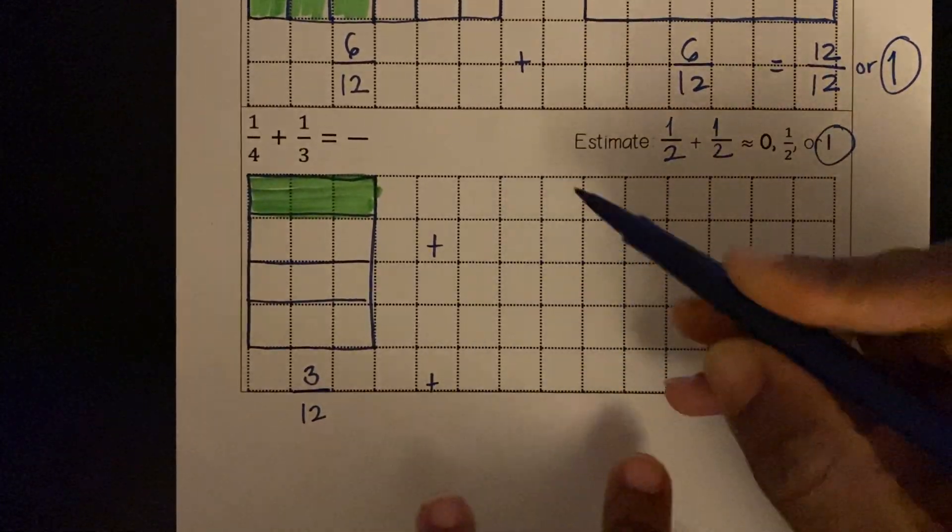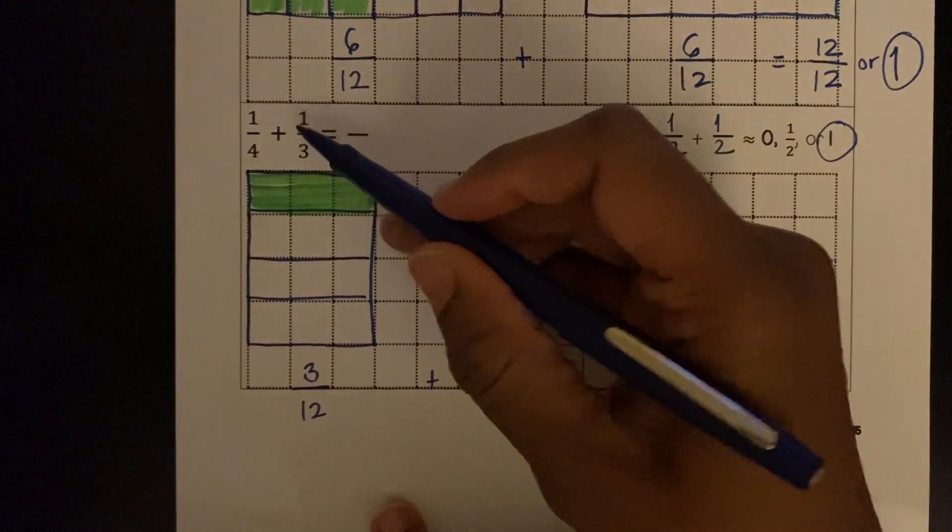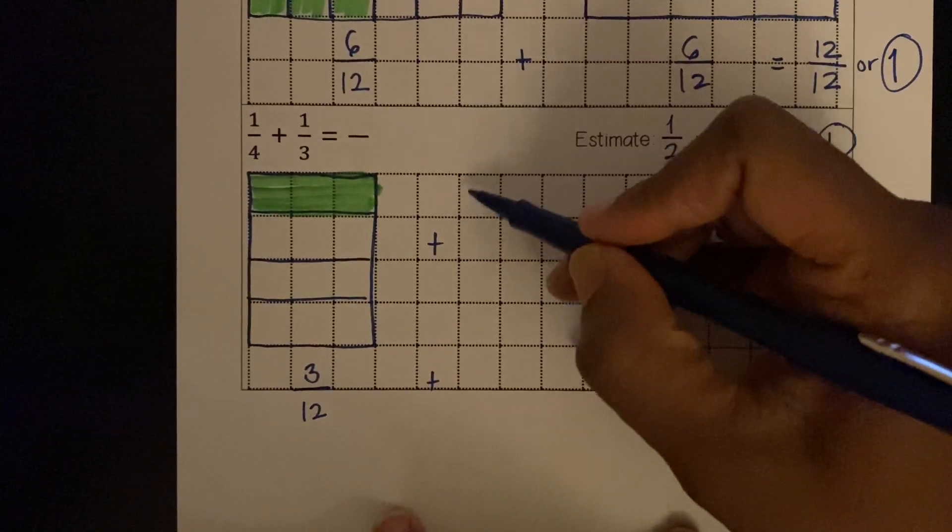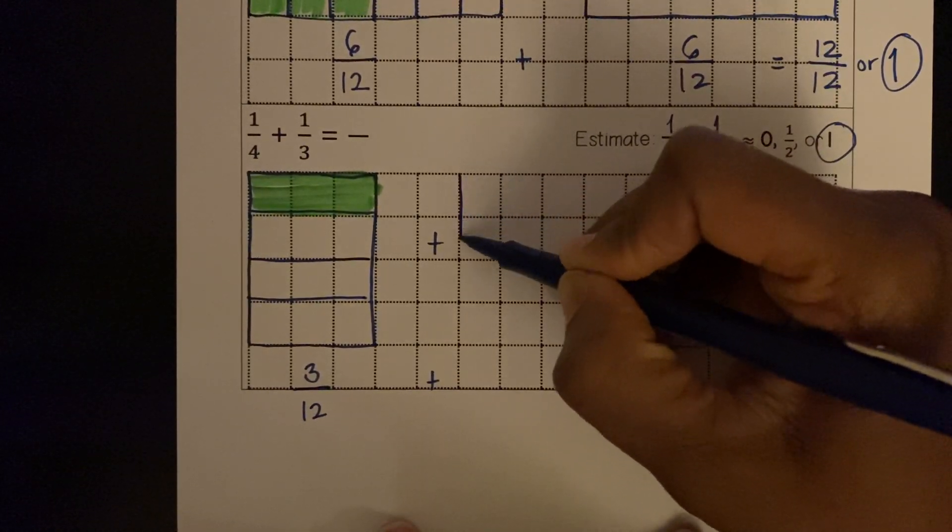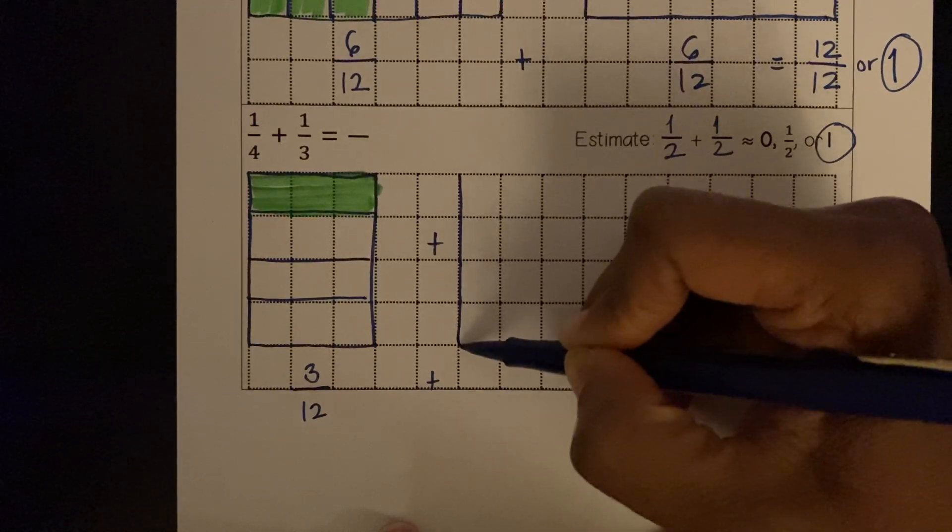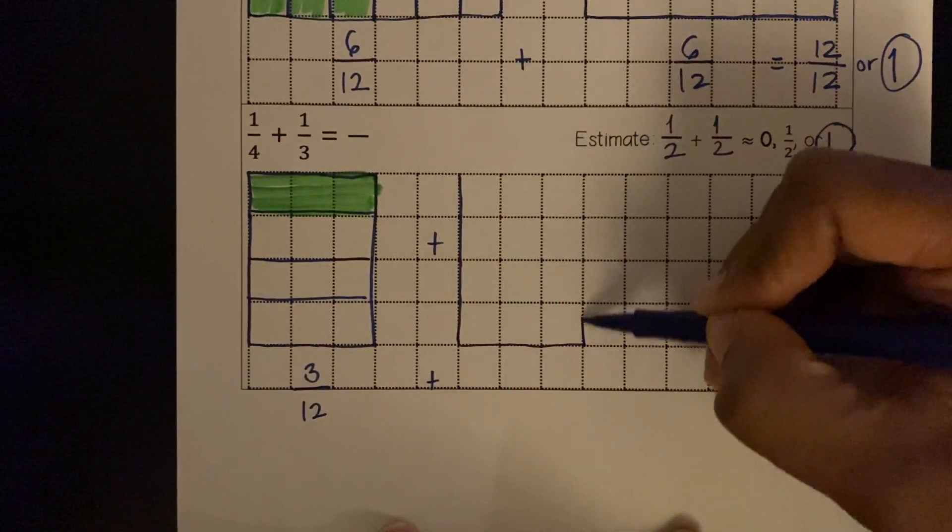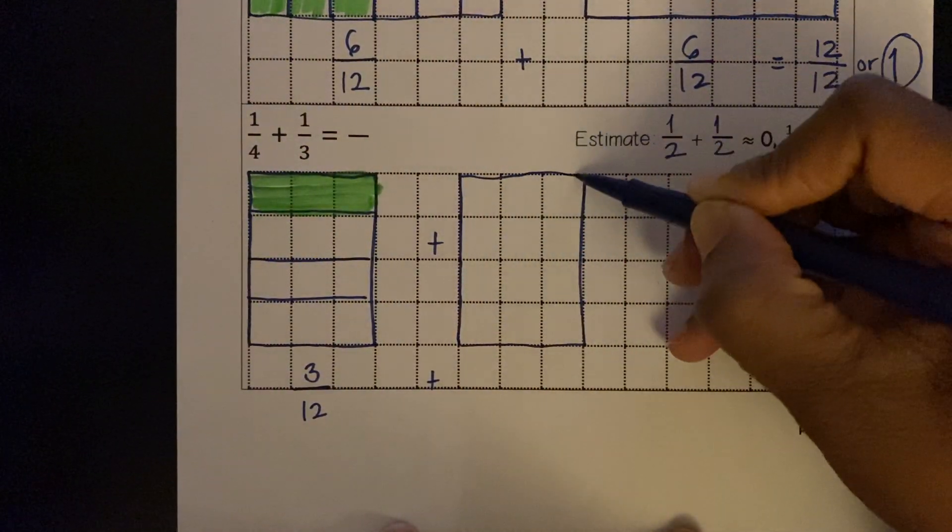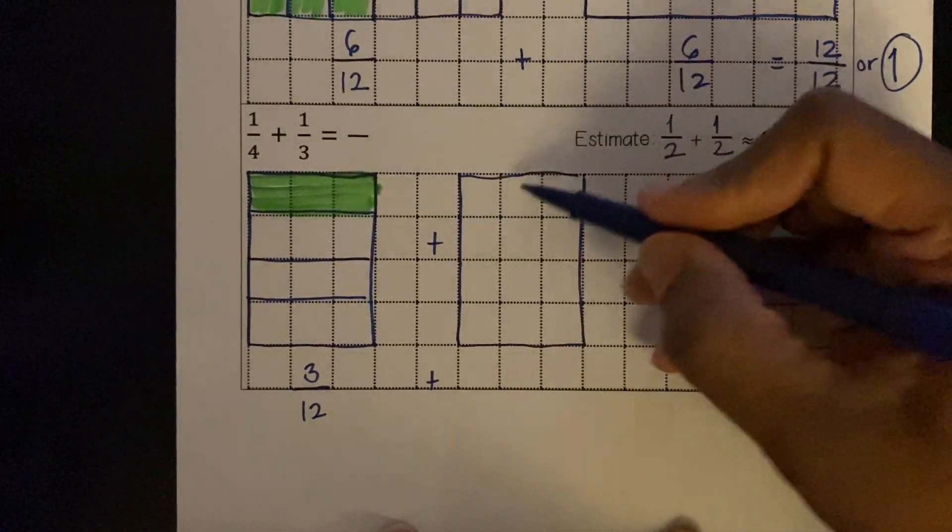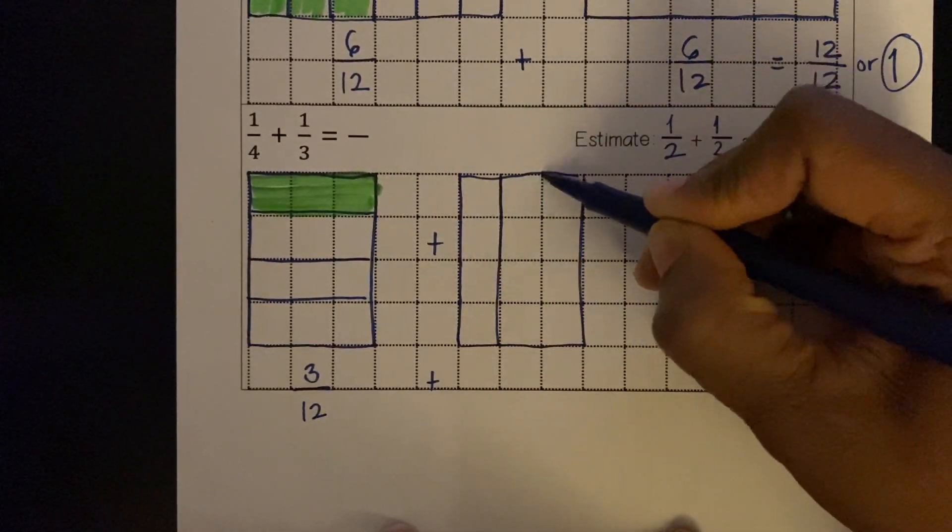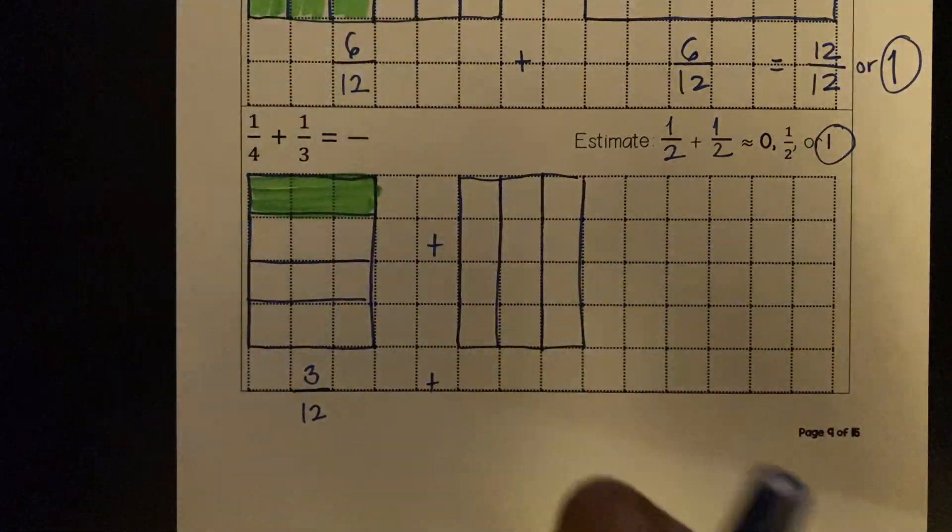Plus, we're going to make another 4 by 3 grid to represent the model, an equivalent fraction to model 1/3. One, two, three, four. One, two, three. We need to partition this shape into 3 equal pieces. 1/3, 2/3, 3/3.